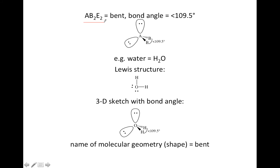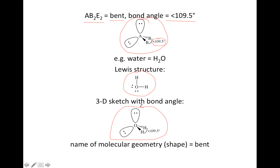Lastly, AB2E2 — a molecule with two atoms bonded to the center and two lone pairs. It's going to end up being called bent with a bond angle less than 109.5 degrees. With two atoms and two lone pairs, you put them in the tetrahedral locations; however, two of them are lone pairs, so that shrinks the bond angle to a little less than 109.5 degrees. The classic example is water. The shape is determined by where the atoms are, not where the lone pairs are, so you call it bent because the H's and the O create a bent shape.